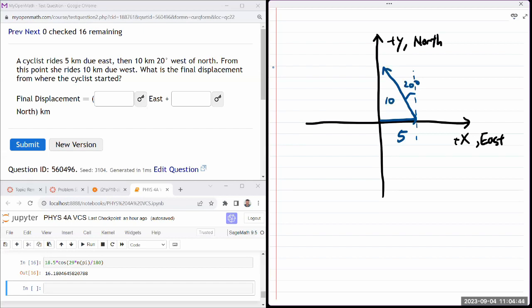And again, this is not drawn to scale. From this point, she rides 10 kilometers due west. What is the final displacement from where the cyclist started?